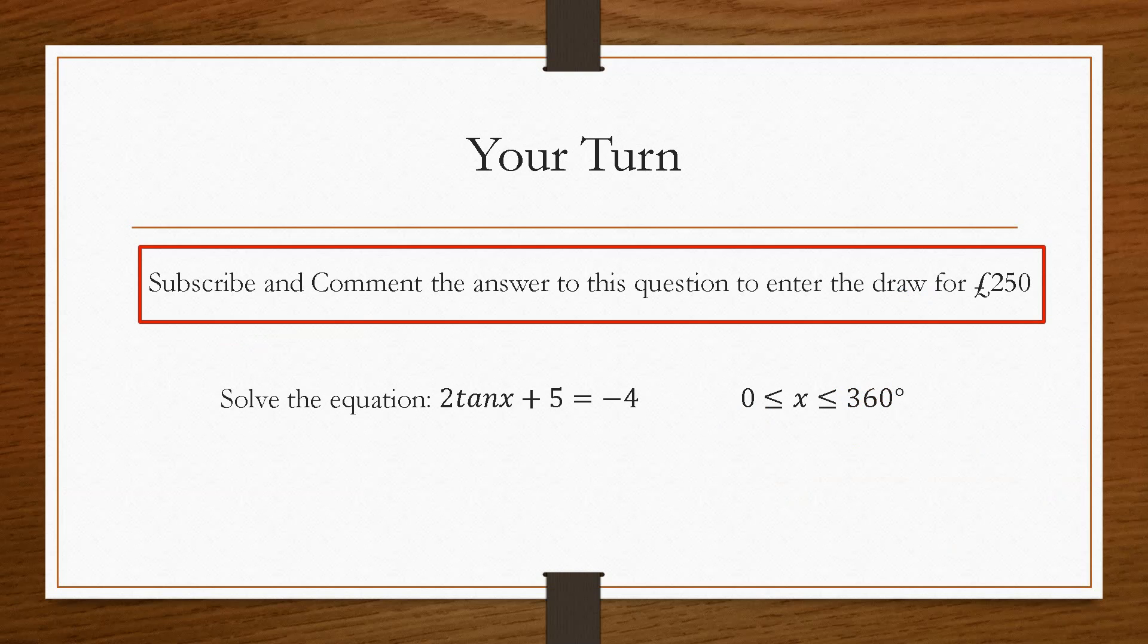So now it is your turn. In order to qualify for the £250 giveaway each month in 2021, all you have to do is subscribe to the channel and comment the correct answer to this question here. Only valid subscribers with the correct answer will be entered into the monthly prize giveaway. The more comments on all our videos published in 2021, the more entries that you will have for the competition at the end of each month. So this question here, we are looking for the two values of x in which this equation satisfies between 0 and 360 degrees. So we have 2 tan x plus 5 equals minus 4. So it's very similar manipulation to the last question that we just done.